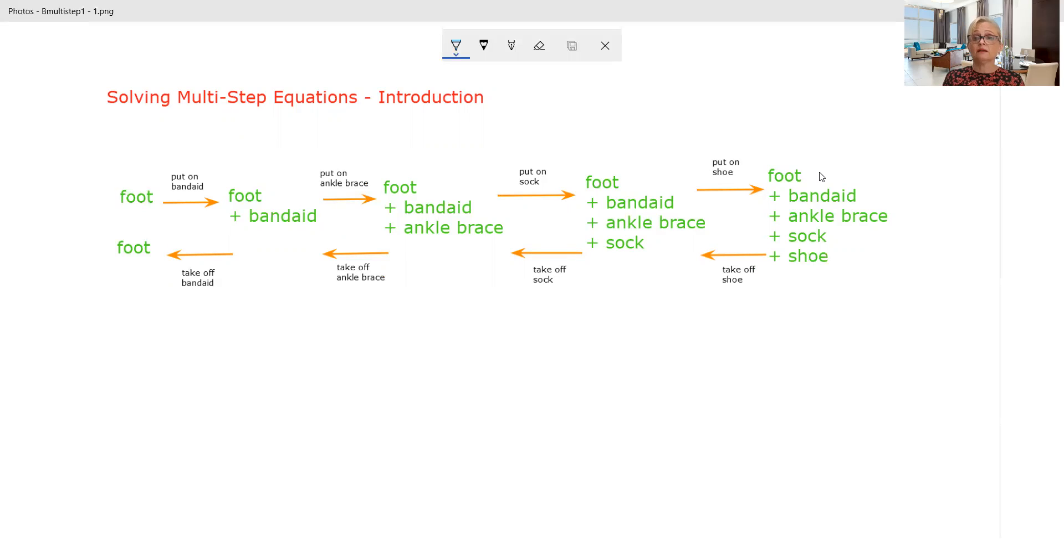The next layer that has to be removed is the sock. Then the next layer that has to be removed is the ankle brace. And finally we can remove the band-aid, clean our wound, put on a fresh band-aid. So basically solving equations involves doing the opposite thing in the opposite order. Let's have a look at some examples.